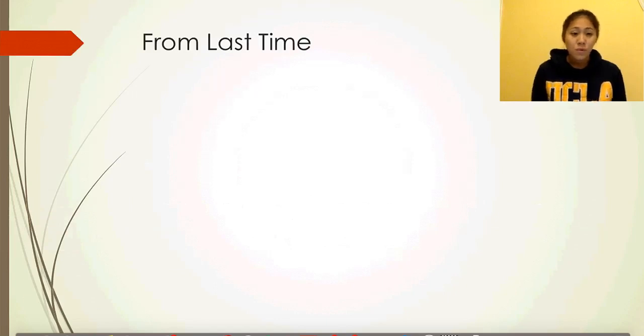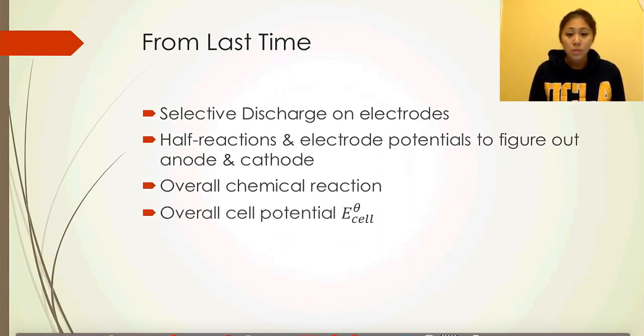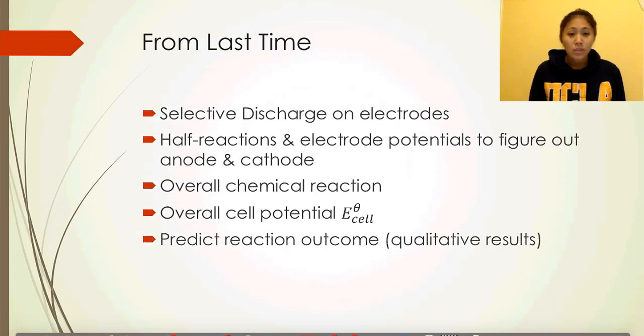From last time, we looked at selective discharge on electrodes. We were able to calculate and figure out the anode and cathode based on the half-reaction equations, then calculated the overall chemical reaction, the cell potential, and predicted the reaction outcome based on the half-reaction equations that occur at various anodes and cathodes.